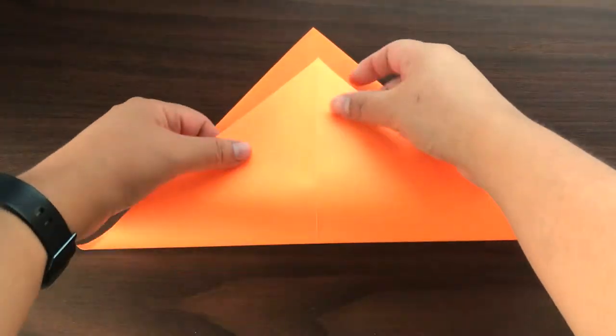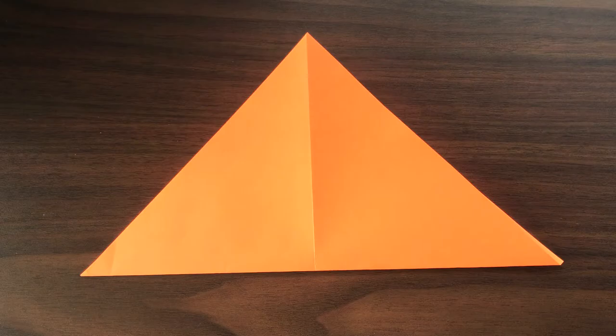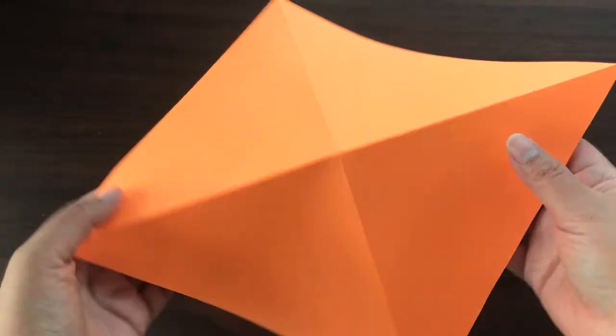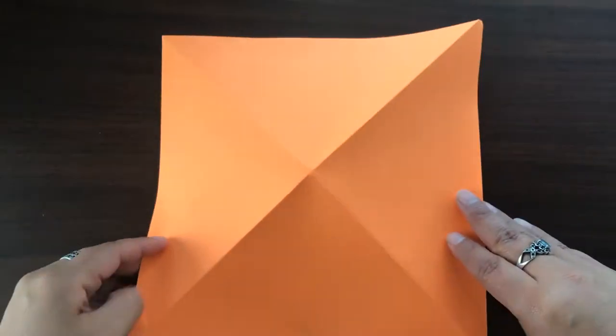Open up your triangle and fold the opposite ends together, creasing gently. Open it up again and flip it over so that the creases sit on top like a pyramid.